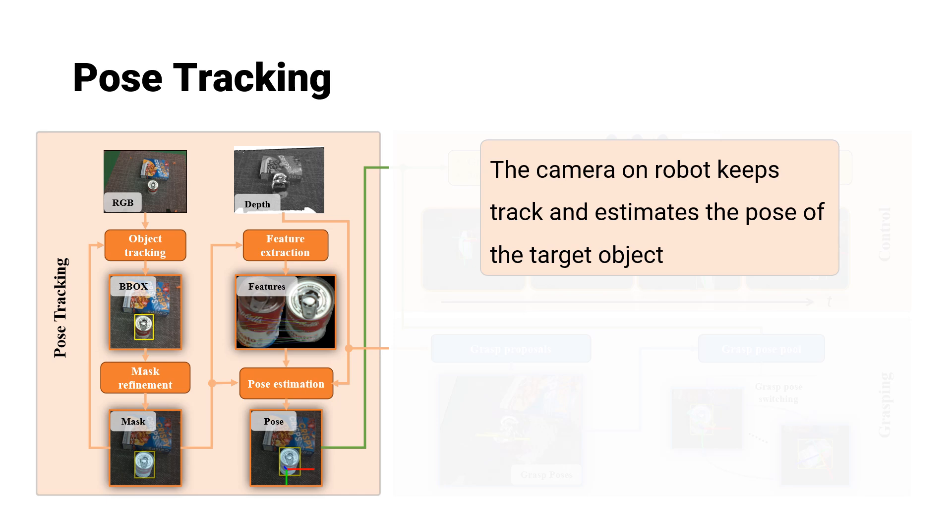We employ a 2D object tracking algorithm to persistently track the object within a 2D image frame. Subsequently, a mask refinement technique is applied to enhance tracking accuracy and extract the mask from the bounding box.